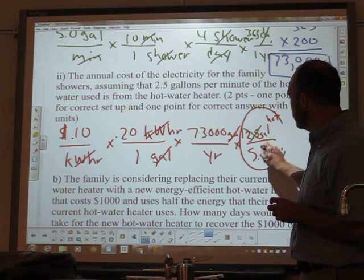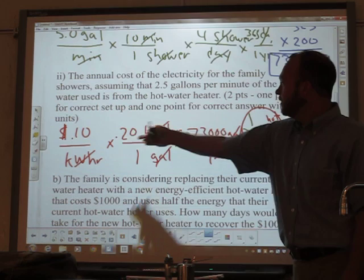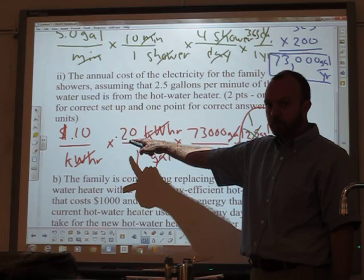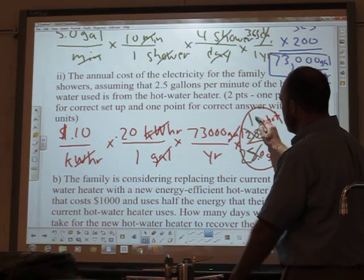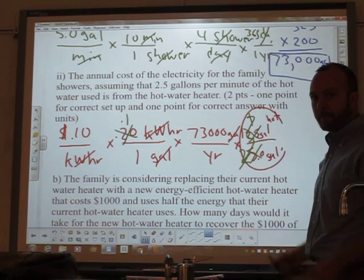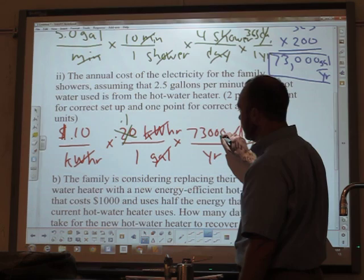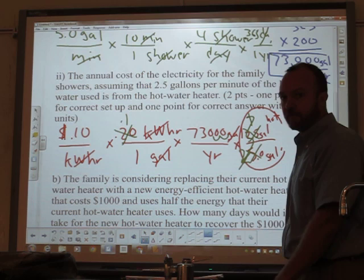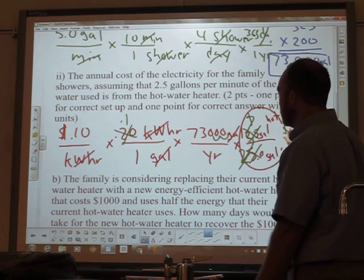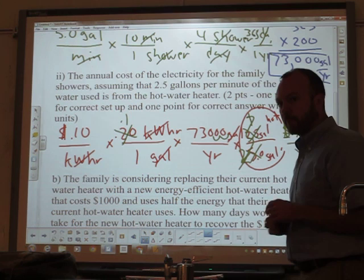This is where we see the real benefit of writing out all the steps at once — we can simplify. Two and a half over five is just a half. The easiest thing to divide in half is 0.2, so half of 0.2 is 0.1. Now my math is really simple. If I multiply by 0.1, I just move the decimal one place. So I take 73,000, multiply by 0.1 to get 7,300, then multiply by 0.1 again to get 730. My answer is 730 dollars per year.